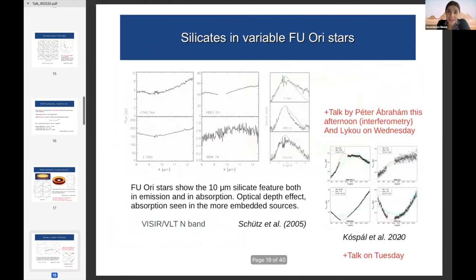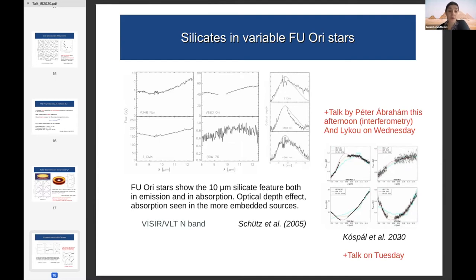Silicates have also been observed in FU Ori stars — eruptive variable young stars. These show the 10 micron silicate feature both in emission and in absorption, which is an optical depth effect. These are N-band VLT VISIR observations by Schütz in 2005. There will be a talk this afternoon by Peter Abraham on interferometry of these objects, and further talks by Lykou on Wednesday and Agnes Kóspál on Tuesday.